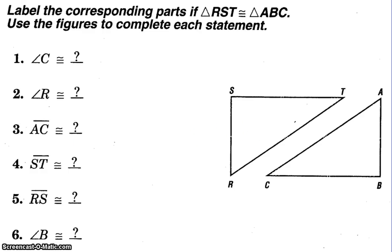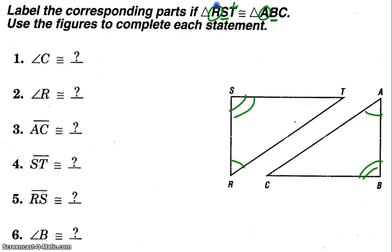When we talk about triangles being congruent, they're listed in the appropriate order to indicate corresponding parts. So in this case, angle R and angle A are corresponding, so they are congruent. Then we have S and B corresponding, and we also have angle T and angle C corresponding.